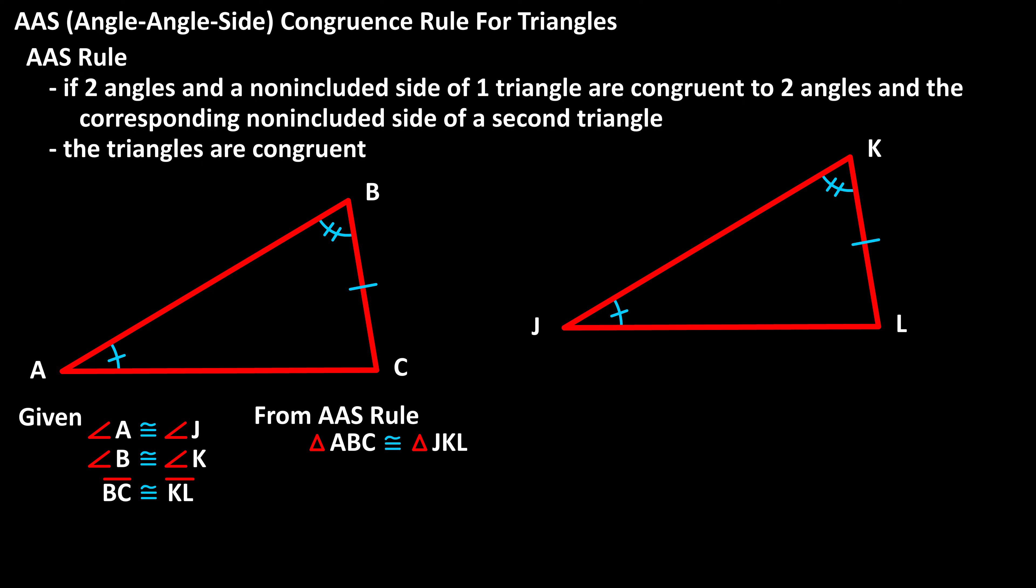And since we know that the triangles are congruent, we also know that the corresponding angles and corresponding sides for the triangles are congruent. So, angle C is congruent to angle L, segment AB is congruent to segment JK, and segment CA is congruent to segment LJ.